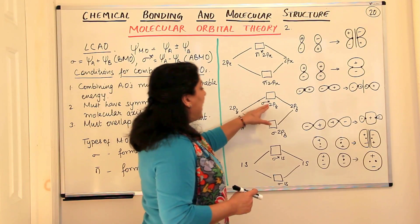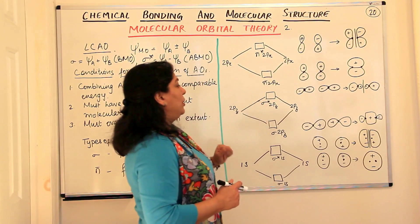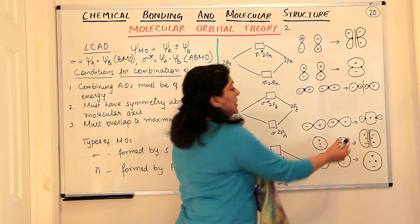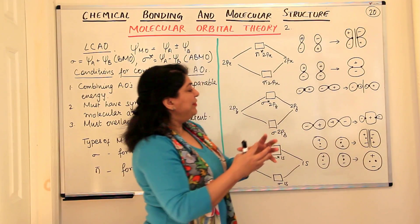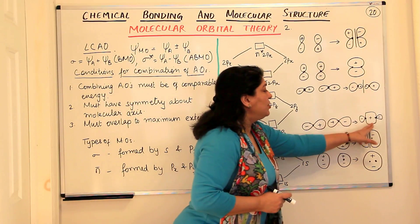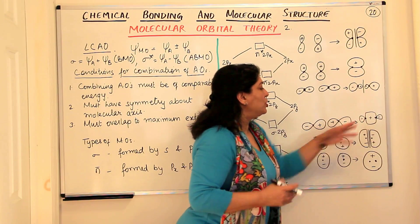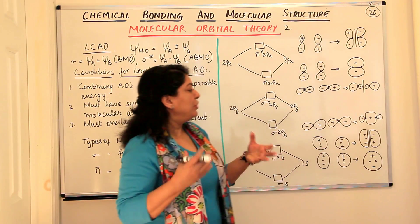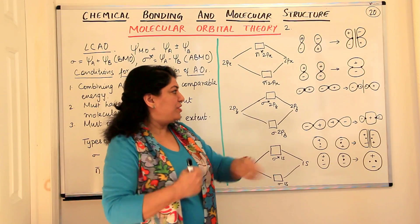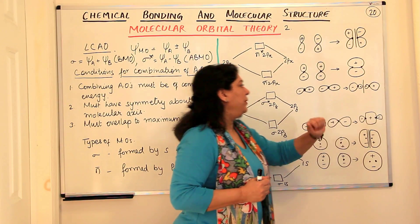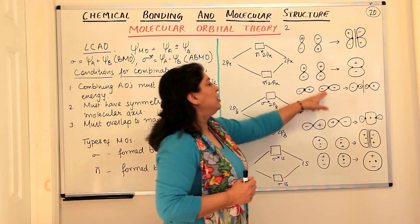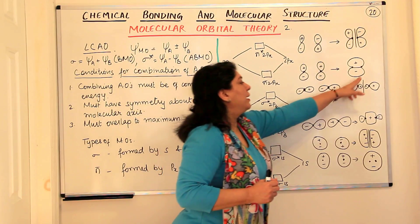So when you have the bonding molecular orbital, the positive lobes have reinforced and the concentration of electrons between the two nuclei is high—it would lead to attraction. Therefore, this is a bonding molecular orbital.